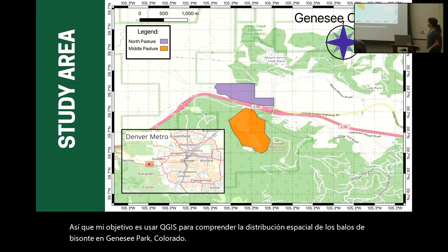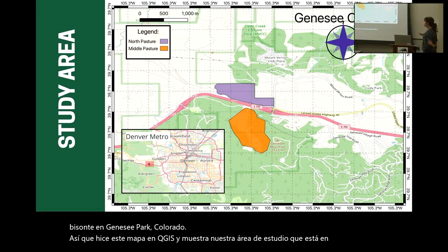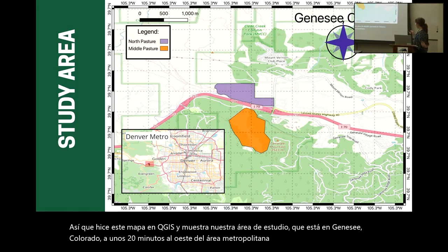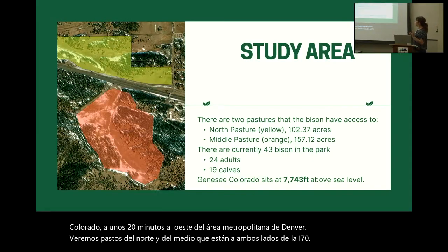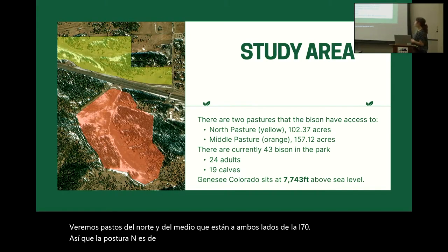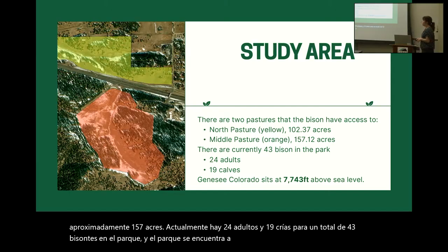I made this map in QGIS, and this shows our study area which is in Genesee, Colorado, about 20 minutes west of the Denver metro area. We will be looking at north and middle pasture, which are on either side of I-70. North pasture is about 102 acres and middle pasture is about 157 acres. There are currently 24 adults and 19 calves for a total of 43 bison in the park, and the park sits at 7,743 feet in elevation.